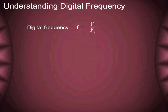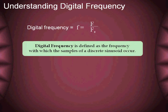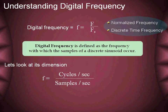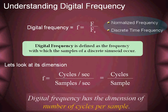This is a governing equation that relates continuous frequency to discrete frequency. Digital frequency is defined as the frequency with which the samples of a discrete sinusoid occur. It is also called the normalized frequency or discrete time frequency. To understand more about discrete frequency, let us compute its dimensions. This frequency, being the ratio of analog frequency to sampling frequency, has analog frequency with the dimension of cycles per second, whereas sampling frequency has units of samples per second, which reveals that digital frequency has the dimensions of cycles per sample.